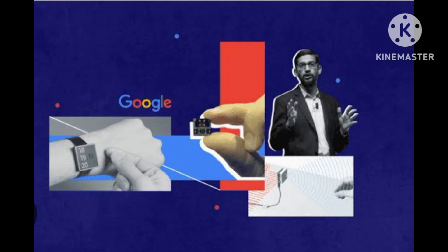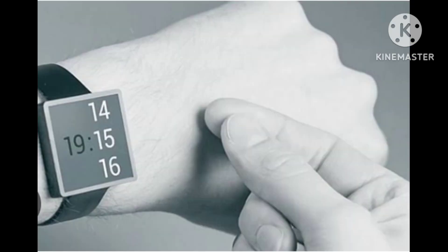Soli uses radar technology to detect the slightest hand or finger movements and translates them into digital commands that can be used to control various devices. Soli is incredibly small, measuring only a few millimeters in size, and can be embedded into devices such as smartwatches, smartphones, and other gadgets.